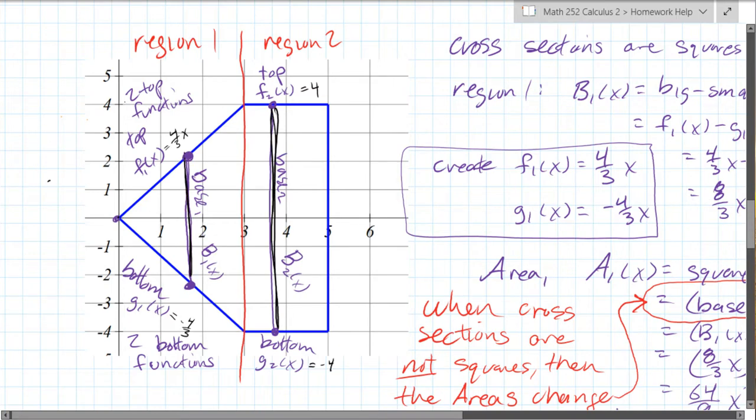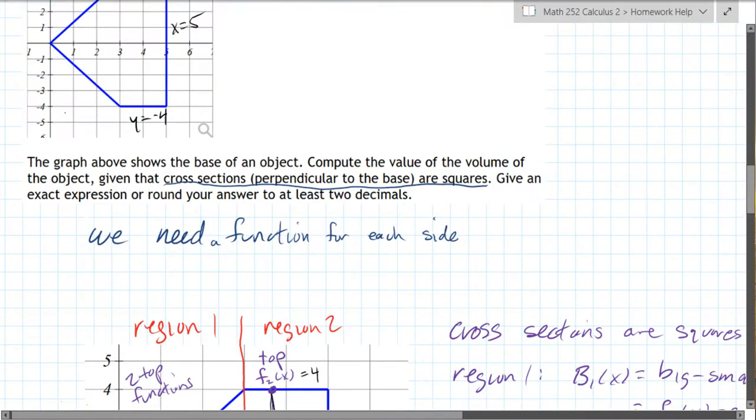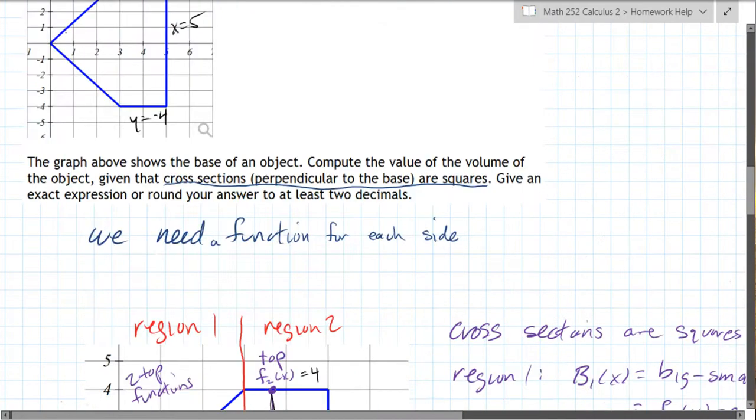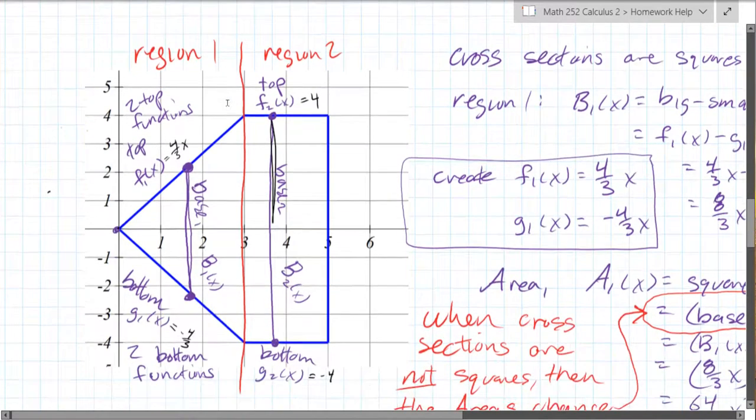All right, so first of all, why did I split it up into two different regions? Because if you look, there's a top function here and then a second top function over here, and whenever you change top and or bottom function, you have to partition the region.